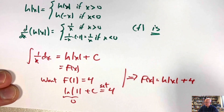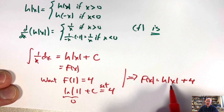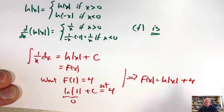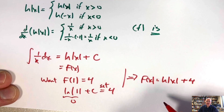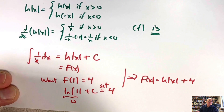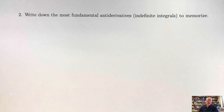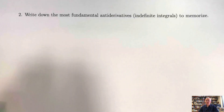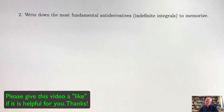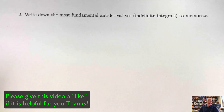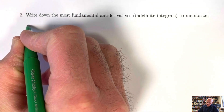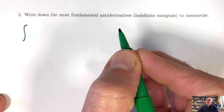Problem 2: write down the most fundamental antiderivatives to memorize. The first is the reverse of the power rule. The integral of x^n is x^(n+1)/(n+1) + c. Instead of subtracting 1 from the exponent, you add 1; instead of multiplying by the exponent, you divide by it. Then add c.